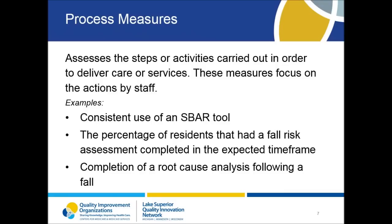Process measures are very important because just drawing attention to an issue or problem can result in a temporary improvement in the outcome. This may lead you to think the improvement is because of a change that was put in place, and you declare victory. Unfortunately, the outcome will likely not be sustained over time, and you will be left thinking the intervention was not successful when, actually, it was never implemented. Process measures are important to prevent this from happening and can also help you determine if the process is able to be followed or sustained over time. Consideration should be given to sample sizes for denominators, exclusion criteria, and alternative processes or workarounds that may exist.